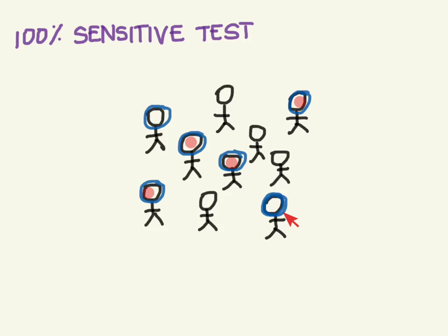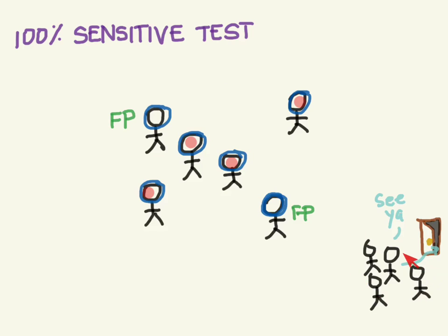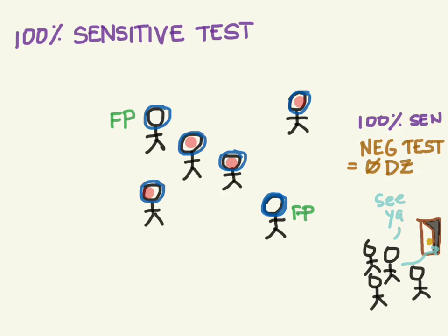Even though this is 100% sensitive, there are some mistakes being made — it falsely picked up this one and this one, so we do have a couple of false positives. Now if we told everybody whose test was negative to go home, everyone with a negative test leaves, leaving only the patients who had positive tests. With our 100% sensitive test, we would not be sending home anyone with the disease. So if anyone has a negative test, they don't have the disease — in medical parlance, we've ruled them out. For a highly sensitive test, when that test is negative, we've ruled them out for disease. This spells SNOUT: Sensitive, Negative, rules OUT.